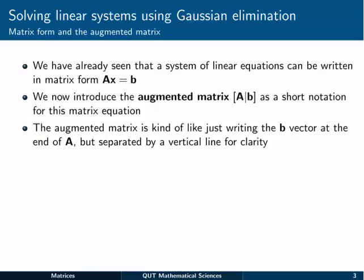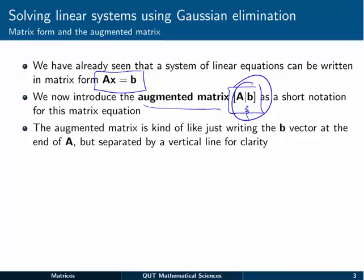We've already seen that a linear system of equations can be written in AX equals B matrix form. We're now going to use what's called the augmented matrix, written as A and then a vertical line B, as a shorthand notation for that matrix equation. We'll take it as given that there's a set of unknowns in some vector X that we need to find. The augmented matrix is just a way of writing the B vector at the end of A, separated with a vertical line.